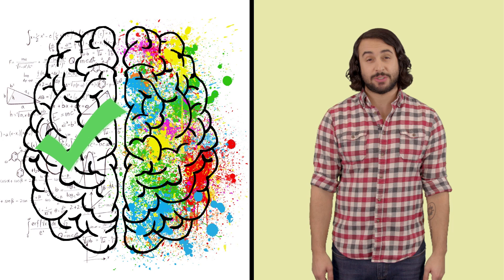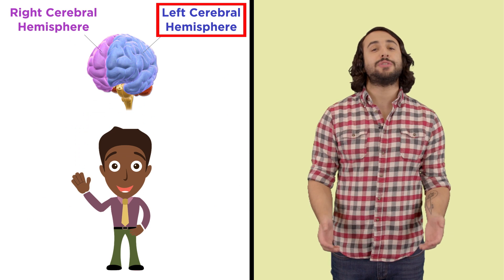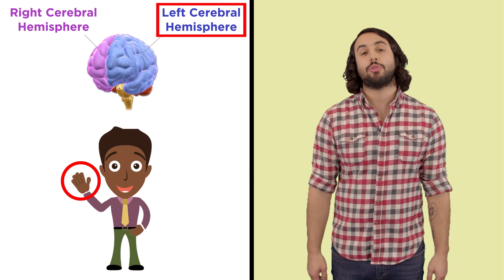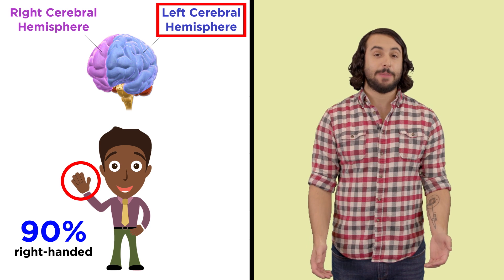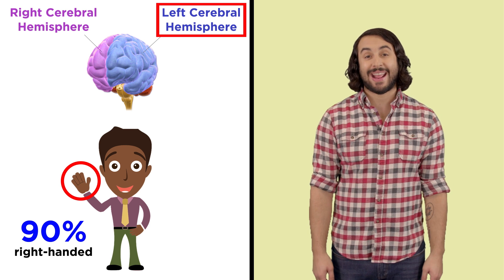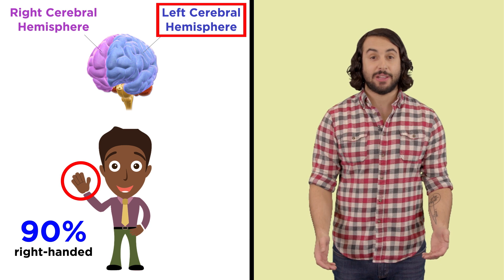If there were such a thing, almost all of us would be left-brained. The left cerebral hemisphere controls the right side of the body, and about 90% of people prefer to write with their right hand, indicating left brain motor dominance.